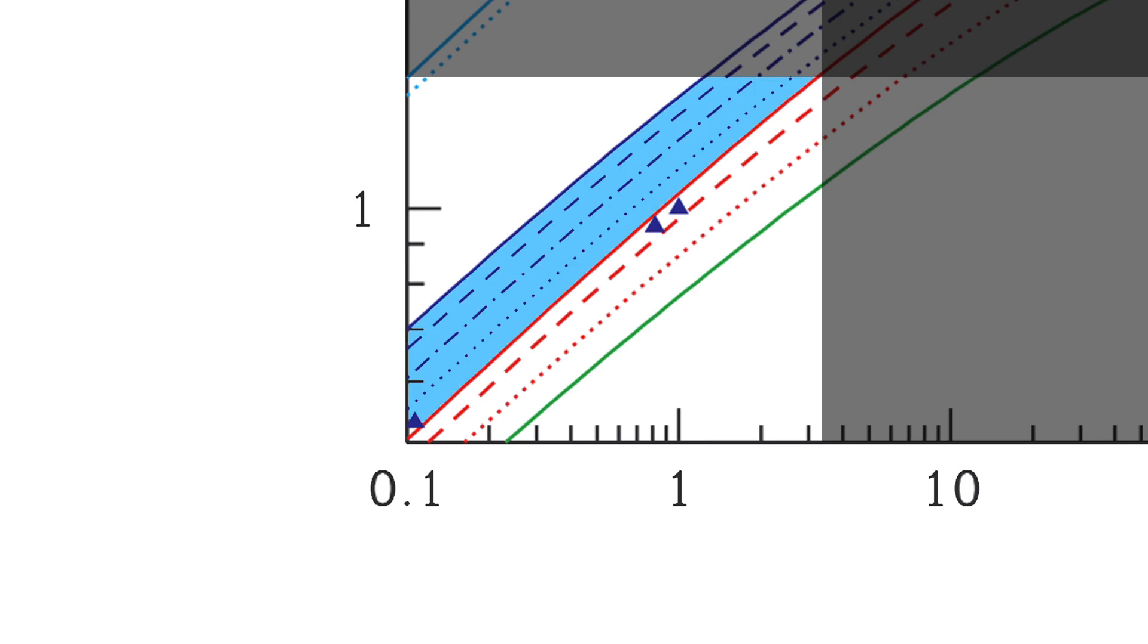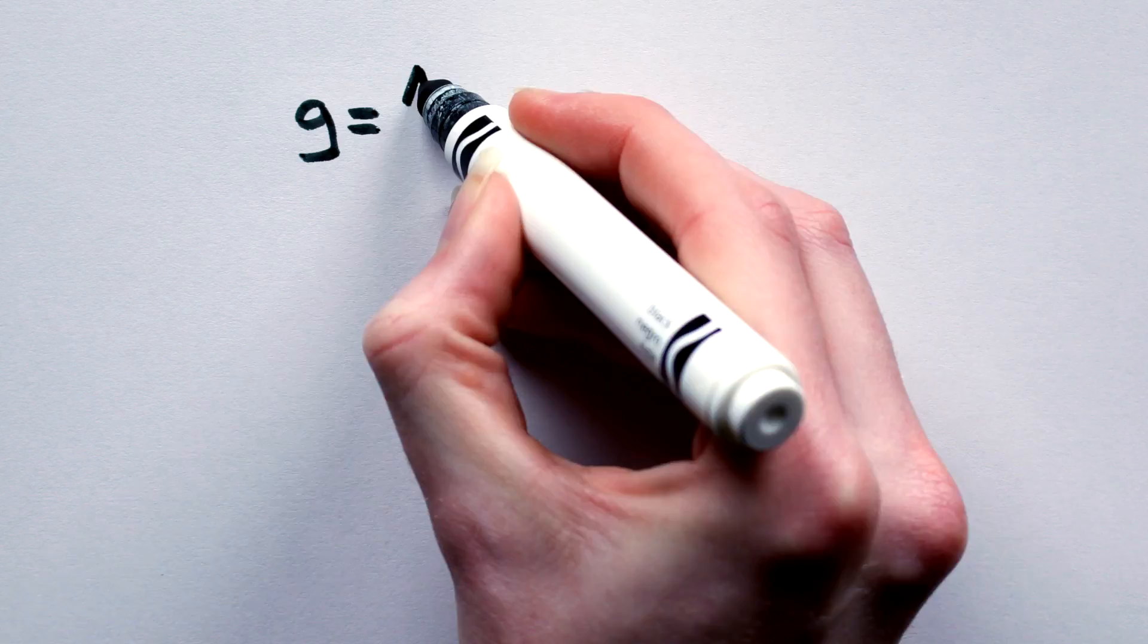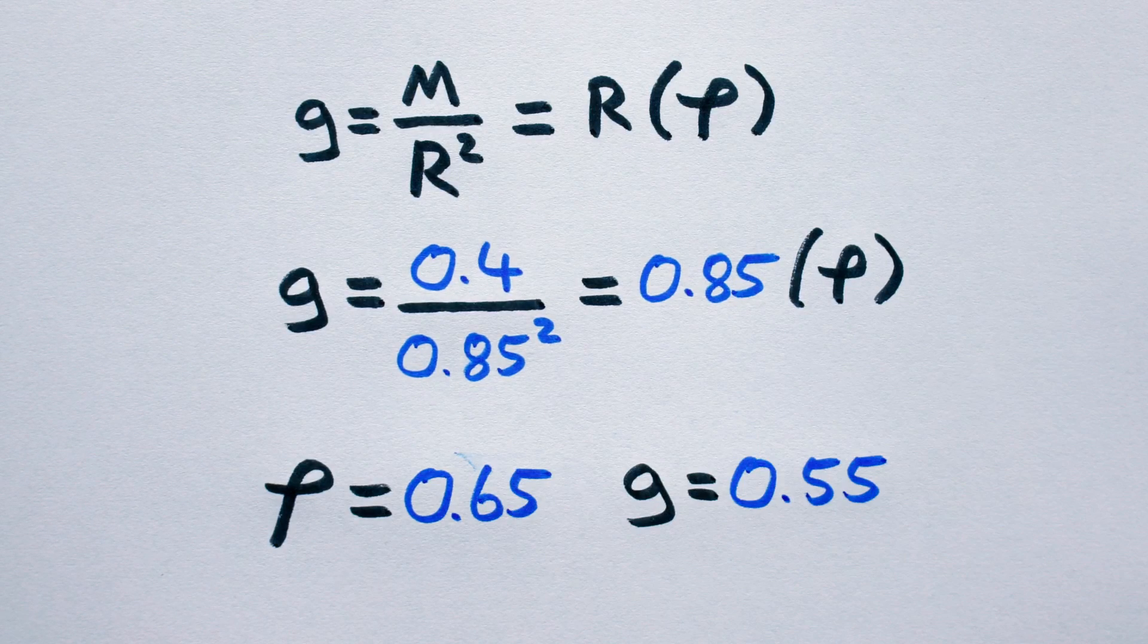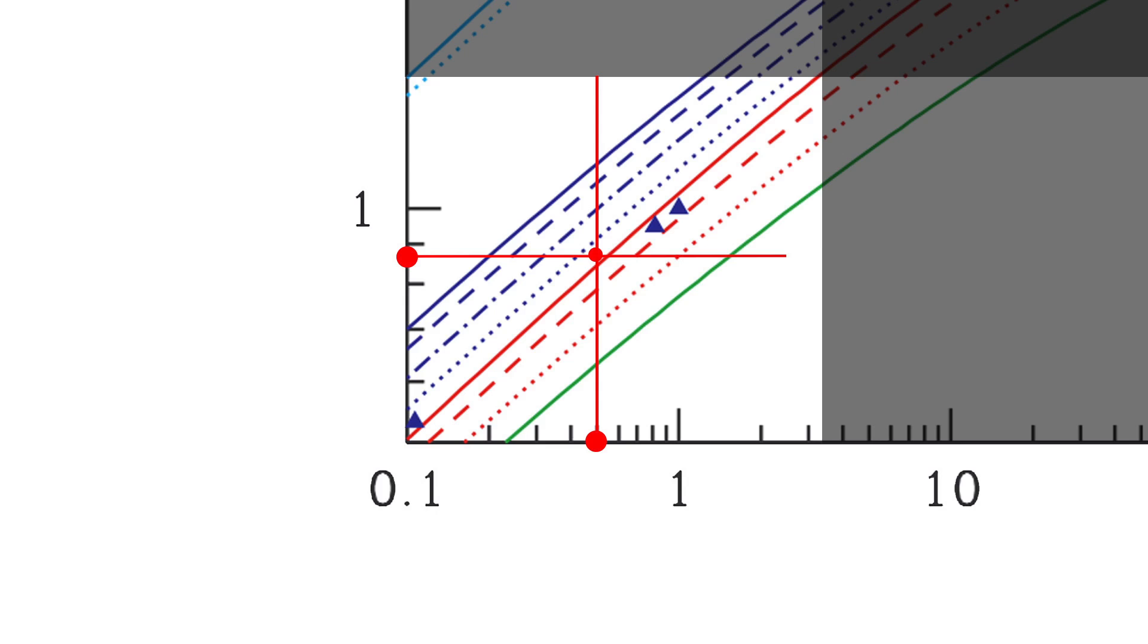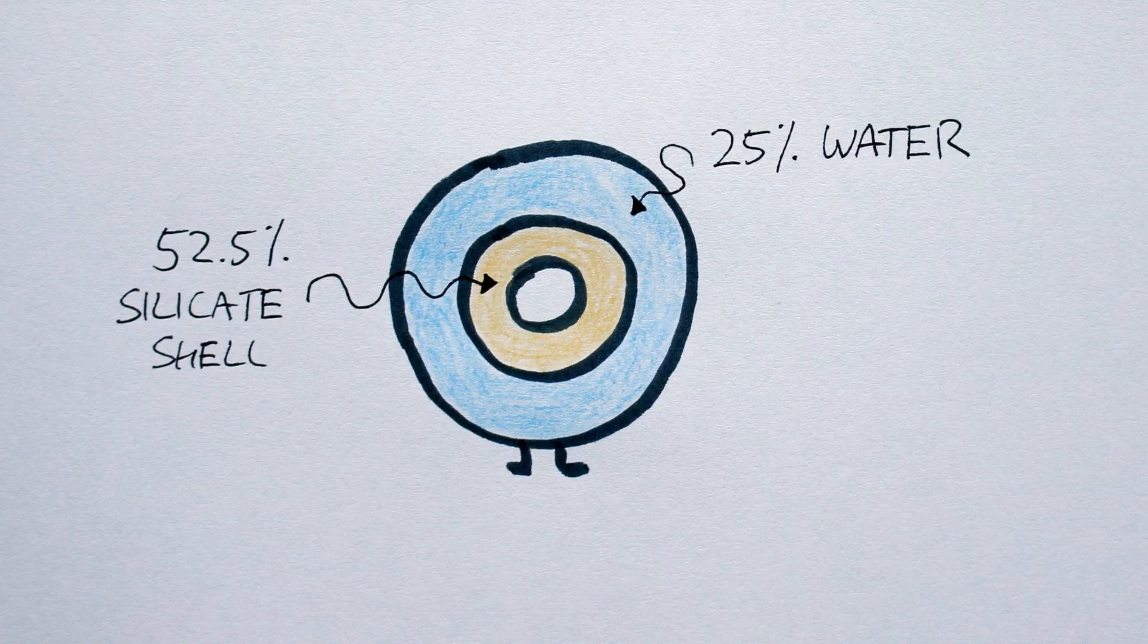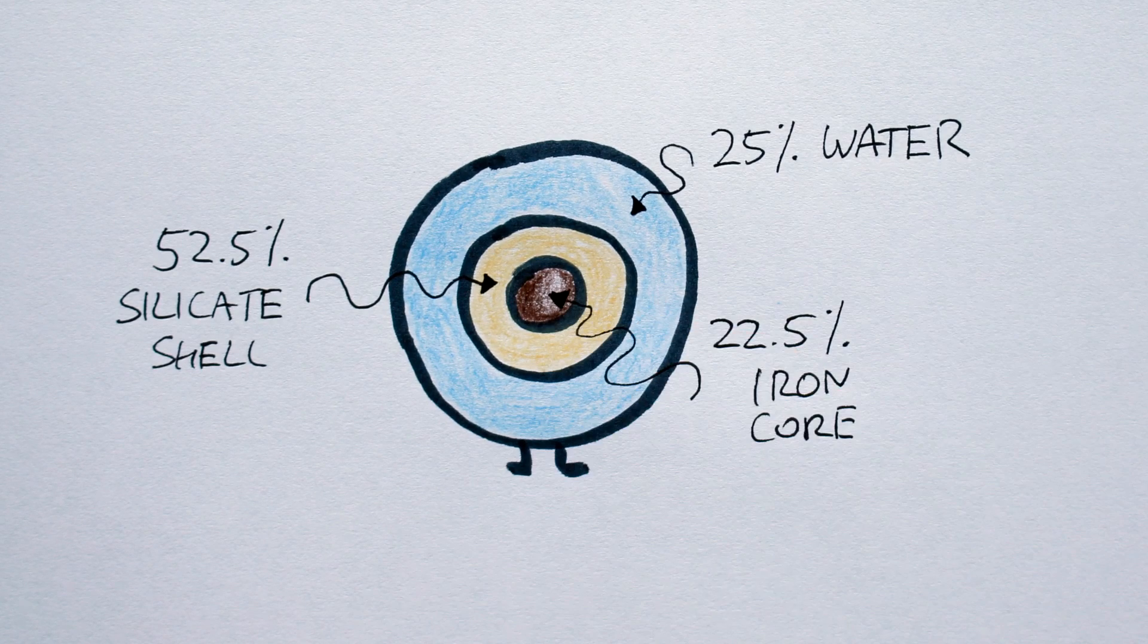Here lie the planets whose overall mass contains a large fraction of water. So let's place our world here, which gives us a mass of 0.4 and a radius of about 0.85-ish. Plug the values into the equation and we get a low-density, low-G world. Those characteristics in and of themselves scream ocean planet. Furthermore, that dotted line on the graph indicates a world with 25% water, a 52.5% silicate shell and a 22.5% iron core. Links in the doobly-doo.